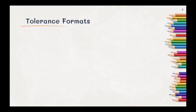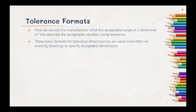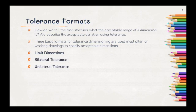Let's take a look at how tolerances are formatted. How do we tell the manufacturer what the acceptable range of a dimension is? We describe the acceptable variation using tolerance. There are three basic formats for tolerance dimensioning that are used most often on working drawings to specify acceptable dimensions. We have limit dimensions, bilateral tolerances, and unilateral tolerances.